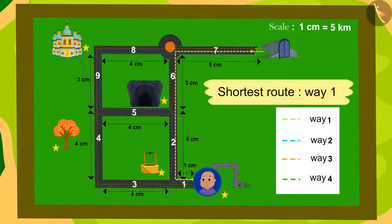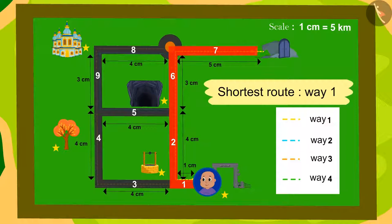Yes, by using way 1, we can take Bablu out of the village of Ulta Pulta by the shortest route. If we add the length of these 4 roads, how many centimeters will we get? 13 centimeters.